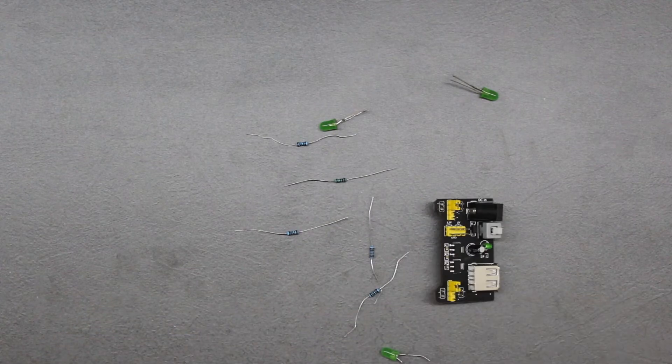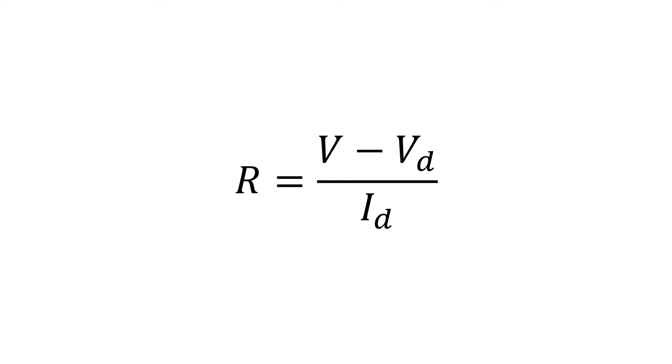The resistor should have a value given by this formula. Here V minus VD is the difference between supply voltage and LED voltage drop, and ID is current drawn by LED.